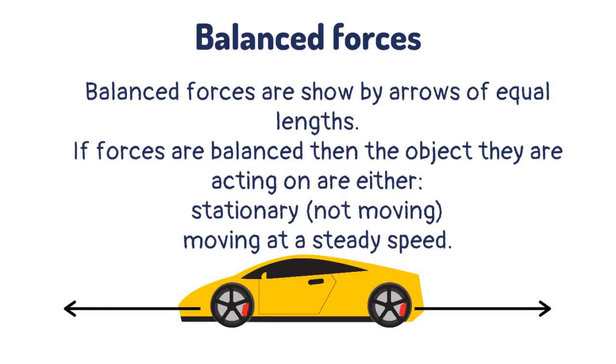Balanced forces are shown by arrows of equal lengths. If forces are balanced, then the object they are acting on is either stationary or moving at a steady speed.